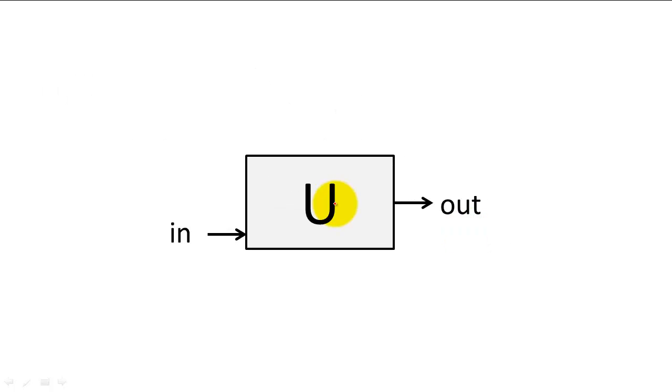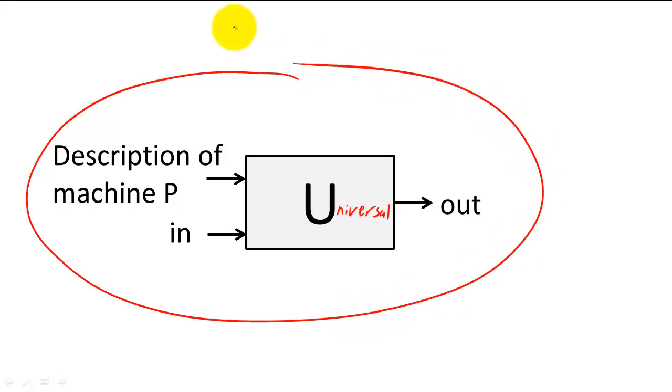So, Turing invented the universal Turing machine. This machine had a basic state machine that could be programmed by a machine description P so that to the external user, the universal Turing machine would behave exactly like a regular Turing machine that was programmed to do P.